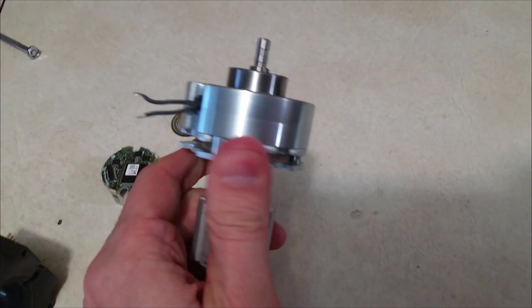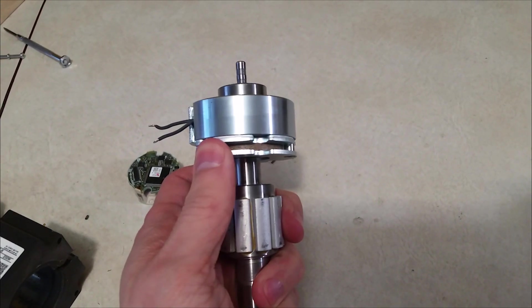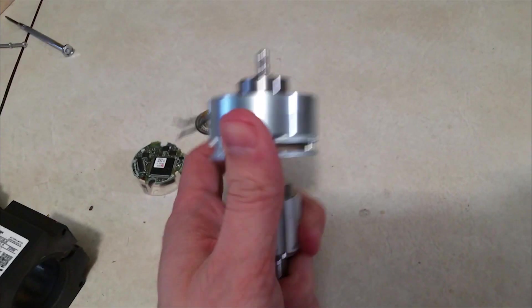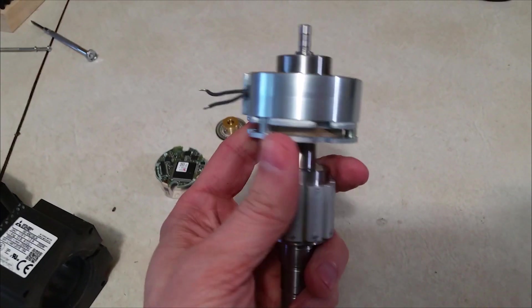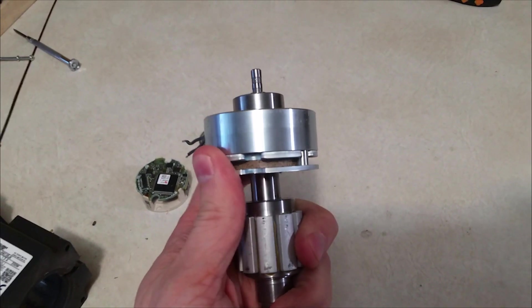But this is a brake. So if you want something to not turn after it loses power, that's what we got here. And you can see I cannot turn this. Now, I have been able to. If you pull it really, really hard, you can turn it. But basically, it locks this rotor from turning.